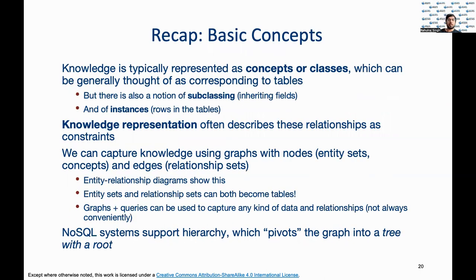Let us recap some of the concepts touched on so far. Classes are a collection of entities that hold information about instances, generally represented as rows in a structured tabular format. Subclassing is an inheriting concept where subclasses are connected to the main class through one or more attributes. The relationship between these classes, subclasses, and individual entities can be represented using ER diagrams or knowledge graphs. Non-relational data can be stored in the NoSQL format, and their representation generally pivots the knowledge graph to a tree with a root.